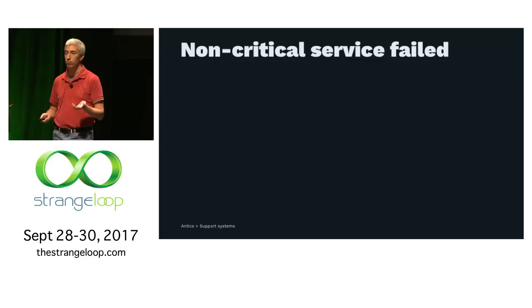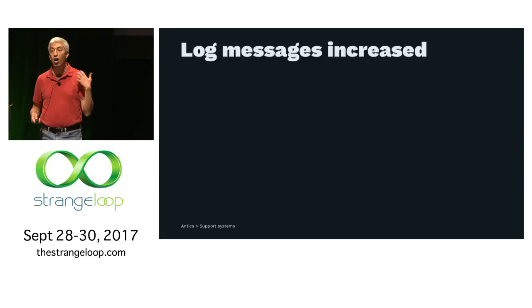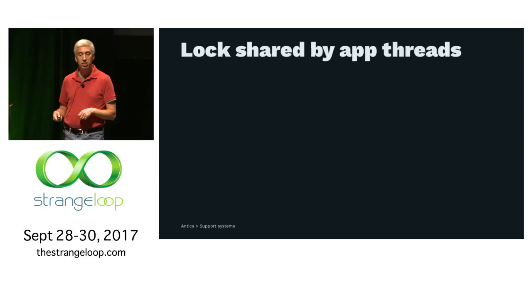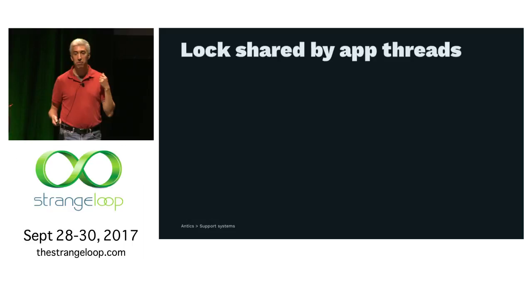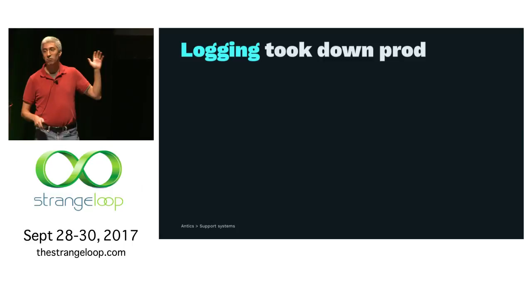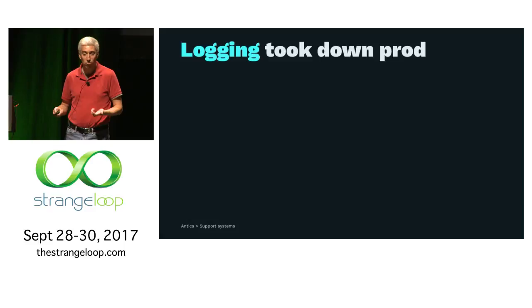Let's talk about another outage. A non-critical service — the AV service — failed. We can't run AV tests, but people should still be able to stream videos. The service calling into the AV service generated more logging messages because it was trying to make a call to this non-critical service, failing, and logging it. This service sends those messages to Kafka. The thread that sends messages to the Kafka queue takes a lock that is also taken by the application threads. As more and more log messages got generated, the application threads were starved — lock contention — and the system throttled. We had an outage. The logging system took down production, and you don't need logging to stream video, but we do — it's a support system.